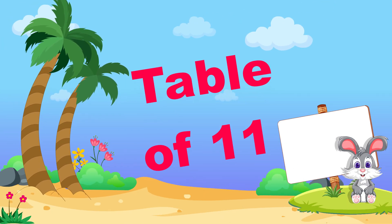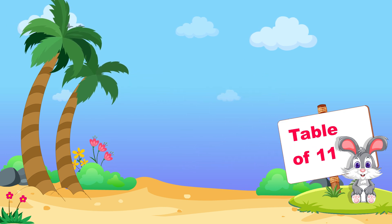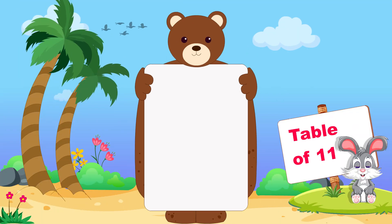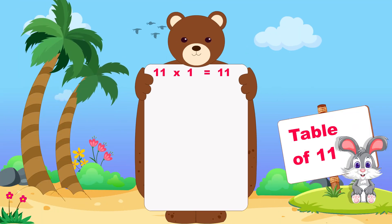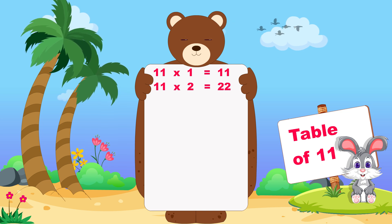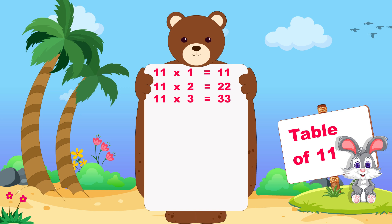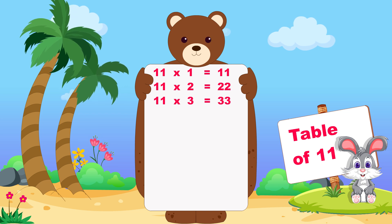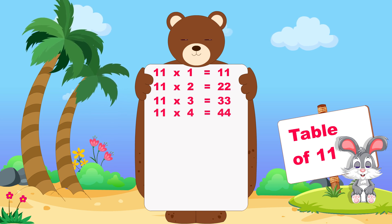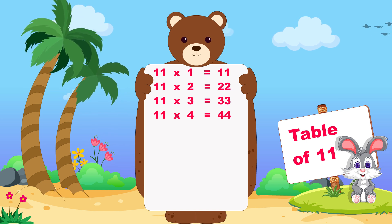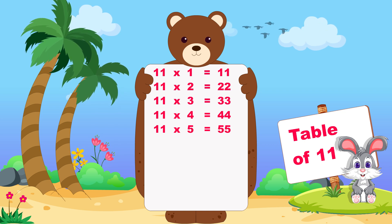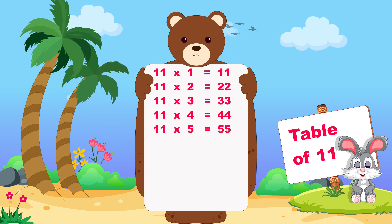Let's learn now table of eleven. Eleven ones are eleven, eleven twos are twenty-two, eleven threes are thirty-three, eleven fours are forty-four, eleven fives are fifty-five.